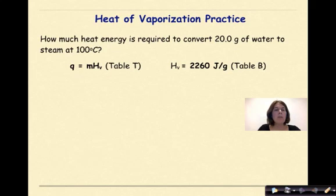Let's look at another example. How much heat energy is required to convert 20 grams of water to steam at 100 degrees Celsius? Now, don't get distracted by the 100 degrees Celsius. That's just the boiling point of water, which is basically saying to us, hey, use Q equals MHV, which is the formula on reference table T that we need to use. So Q equals MHV, where the heat of vaporization is 2260 joules per gram. Our mass here is 20 grams of liquid water. We're going to multiply that times our heat of vaporization, which is 2260 joules per gram.